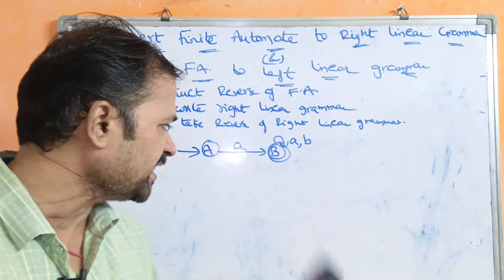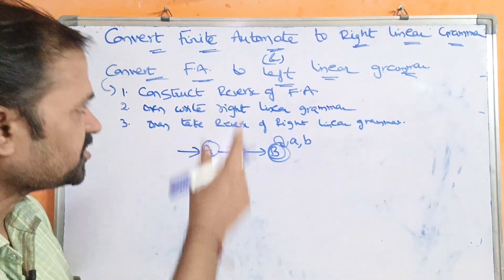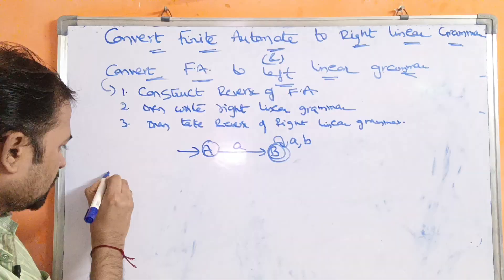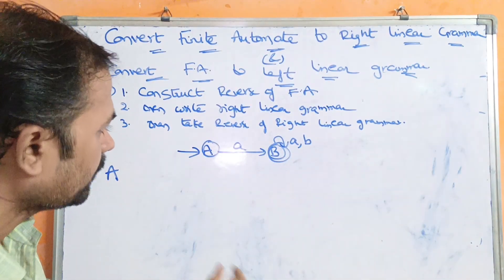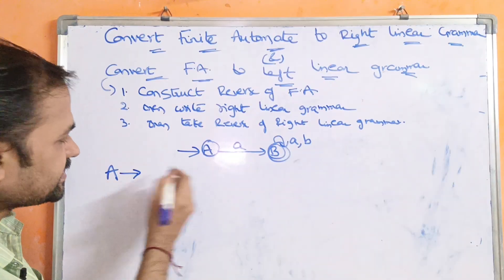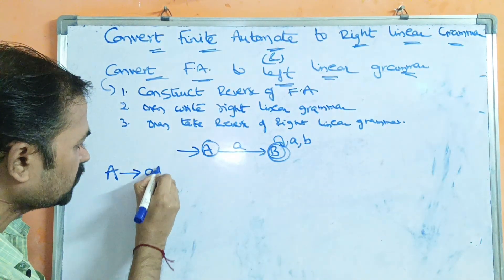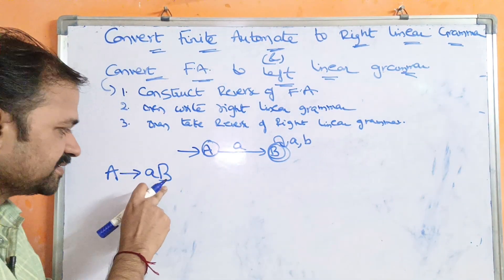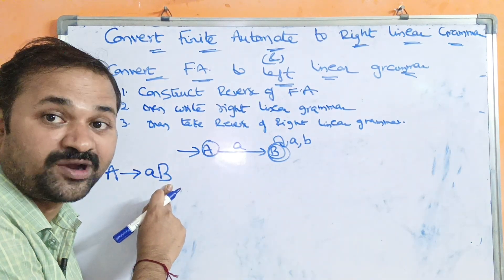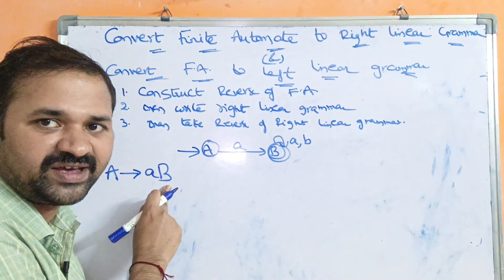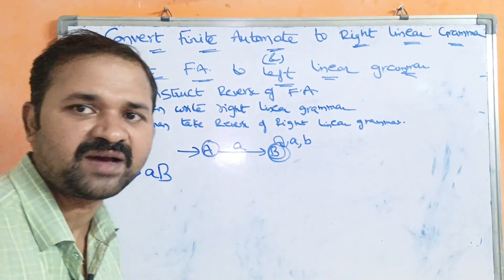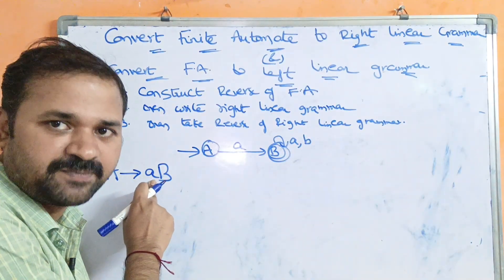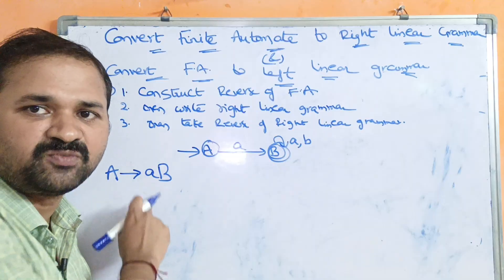Construction of right linear grammar is a direct process. For state a, on input 'a' it goes to b, so we write: A → aB. In right linear grammar, the rightmost symbol on the right-hand side is always a non-terminal. In left linear grammar, the leftmost symbol on the right-hand side is always a non-terminal.